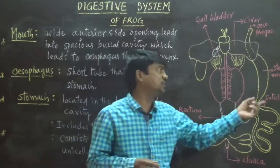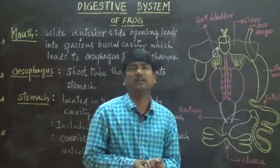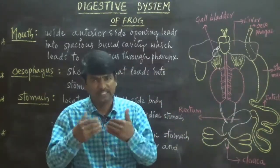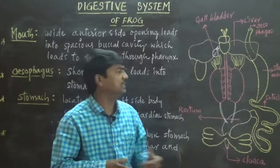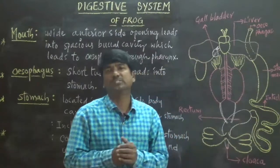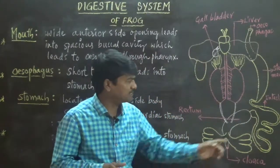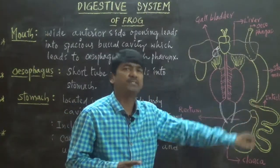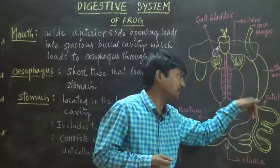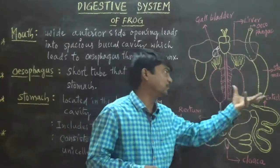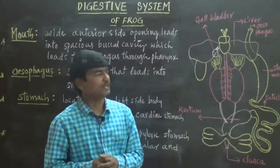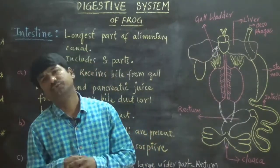The posterior part of the stomach is also known as the pyloric stomach. Between the pyloric stomach and the small intestine, a specific sphincter is present called the pyloric sphincter, which regulates the movement of food from the posterior part of the stomach into the intestine.